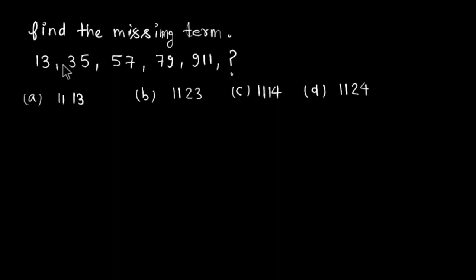Hey guys, welcome back to Solution Mitra. Today's question is find the missing term. Here is the series: 13, 35, 57, 79, 911, and question mark. We have to find the number that appears in the place of this question mark. The options are 1113, 1123, 1114, and 1124.